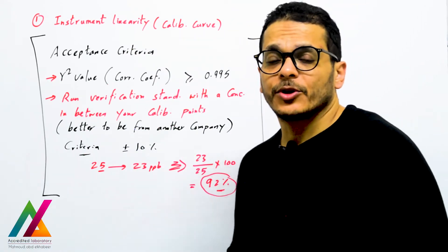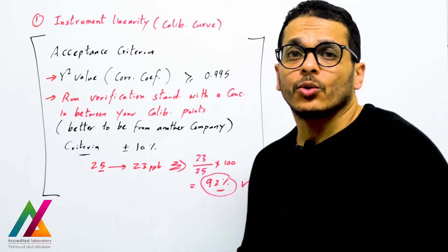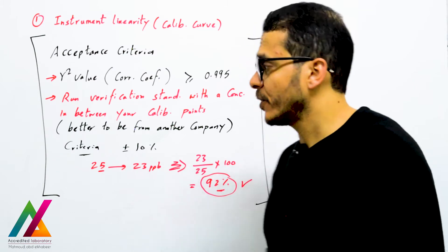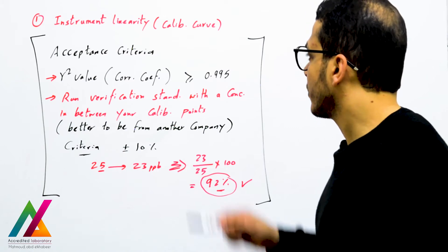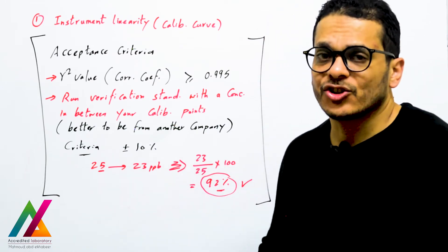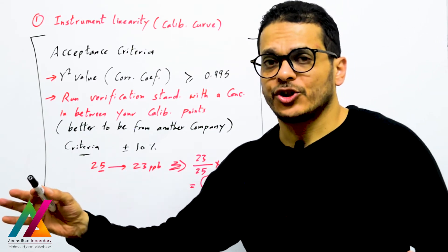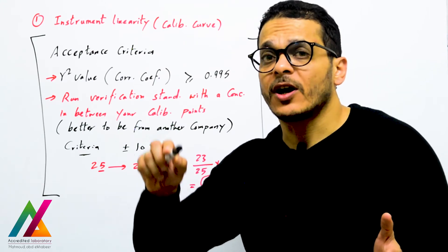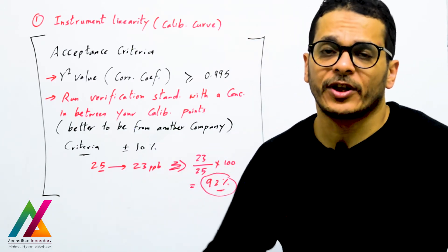The acceptance criteria for the calibration curve include first the R-squared value, or correlation coefficient, which represents the linearity of your calibration curve. It should be higher than or equal to 0.995 according to most guidelines, and sometimes higher than or equal to 0.99. You should also run a verification standard with a concentration between your calibration points — for example, 25 ppb if your calibration range is 1 to 100 ppb.